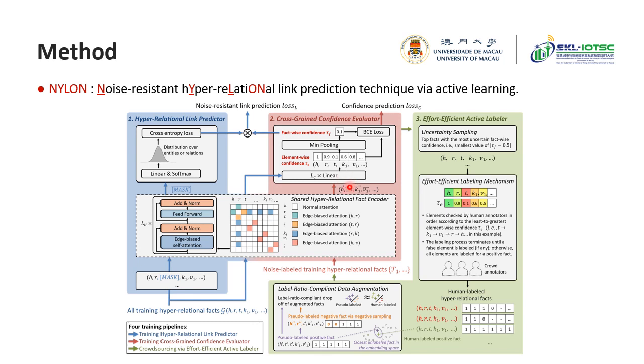Based on this, Naylan consists of three components: a hyper-relational predictor, a cross-sentence confidence evaluator, and an effort-efficient active labeler.